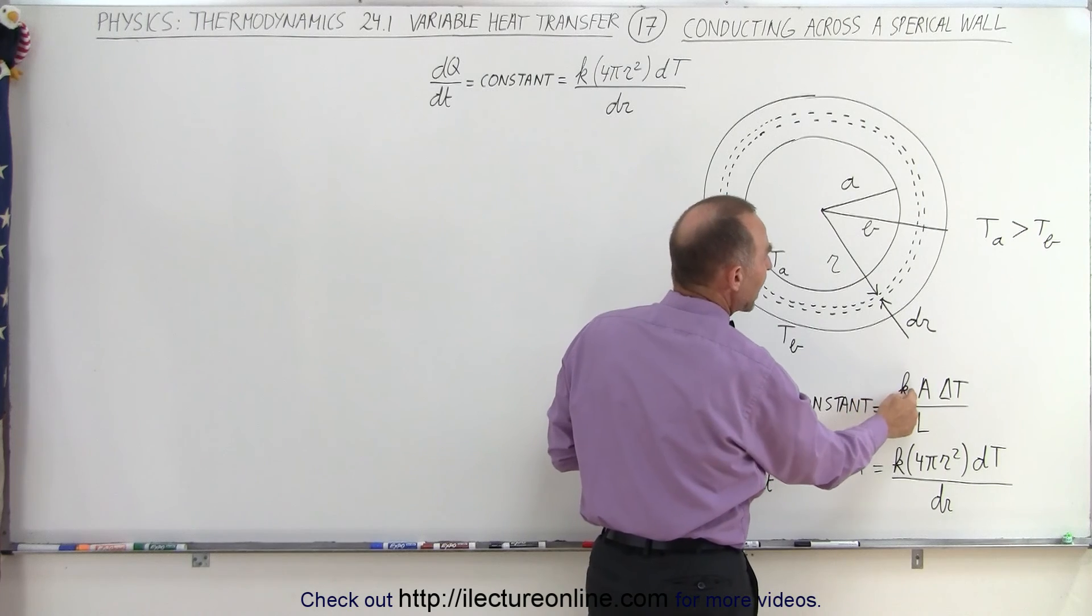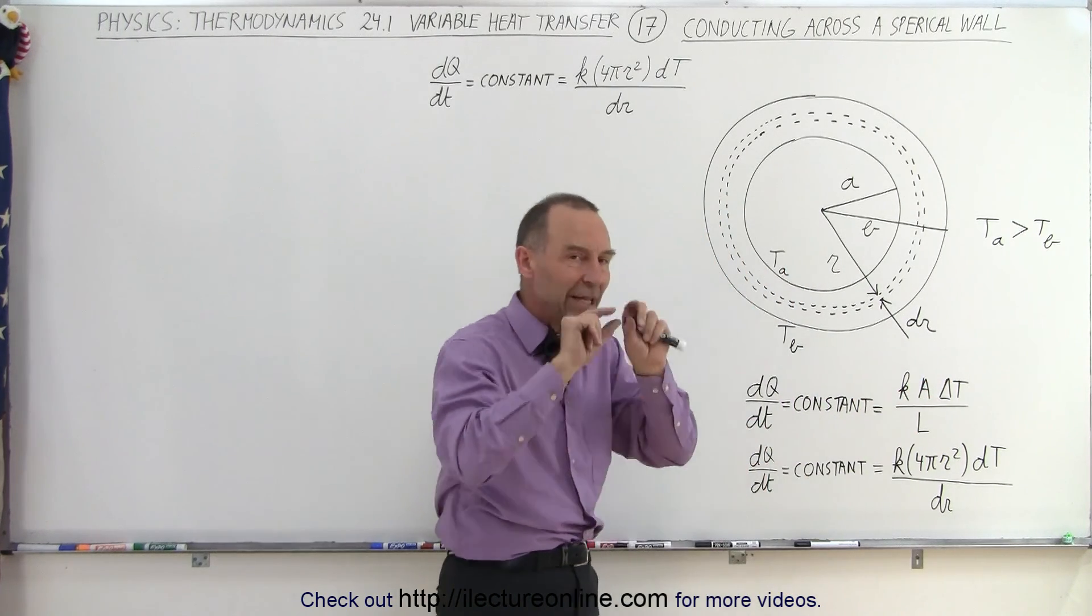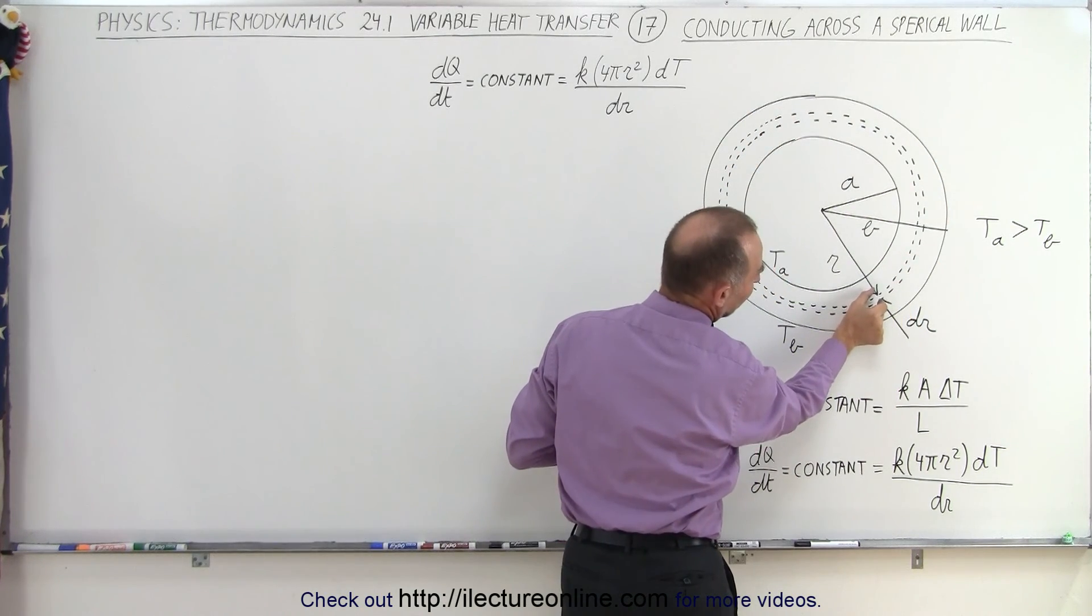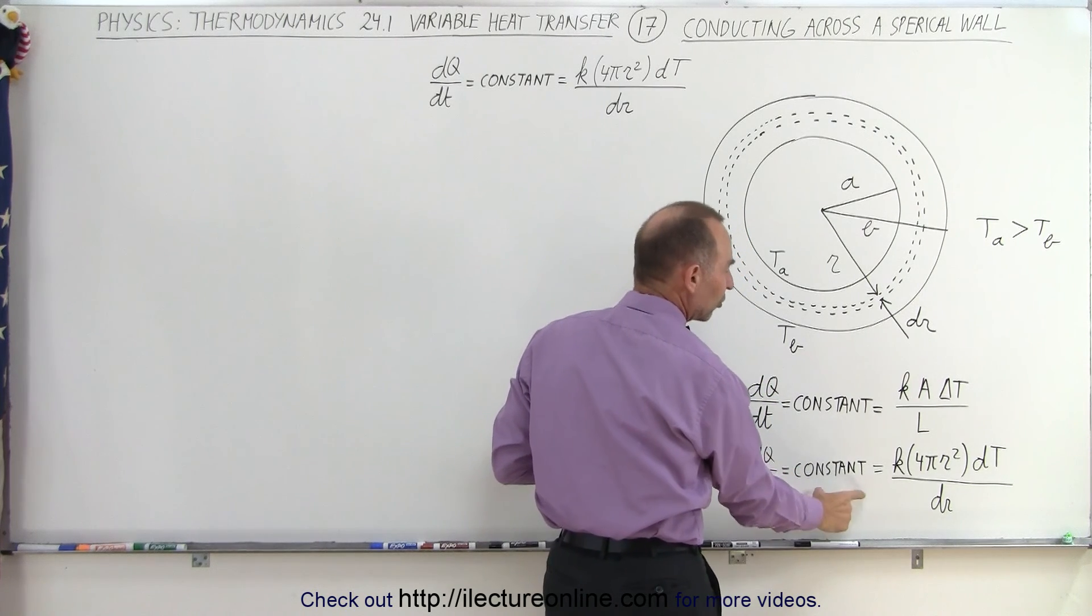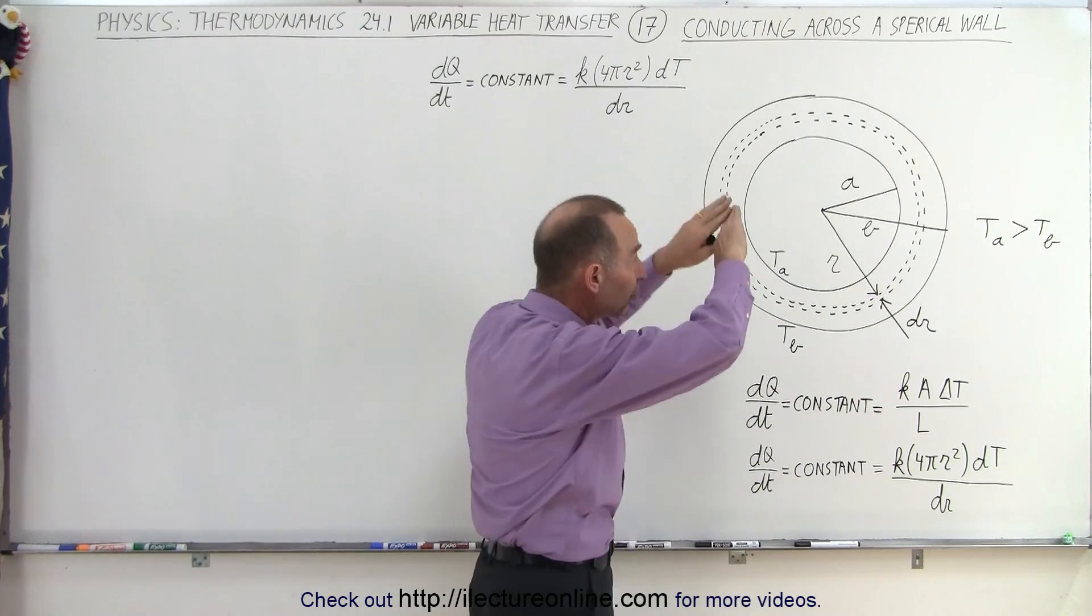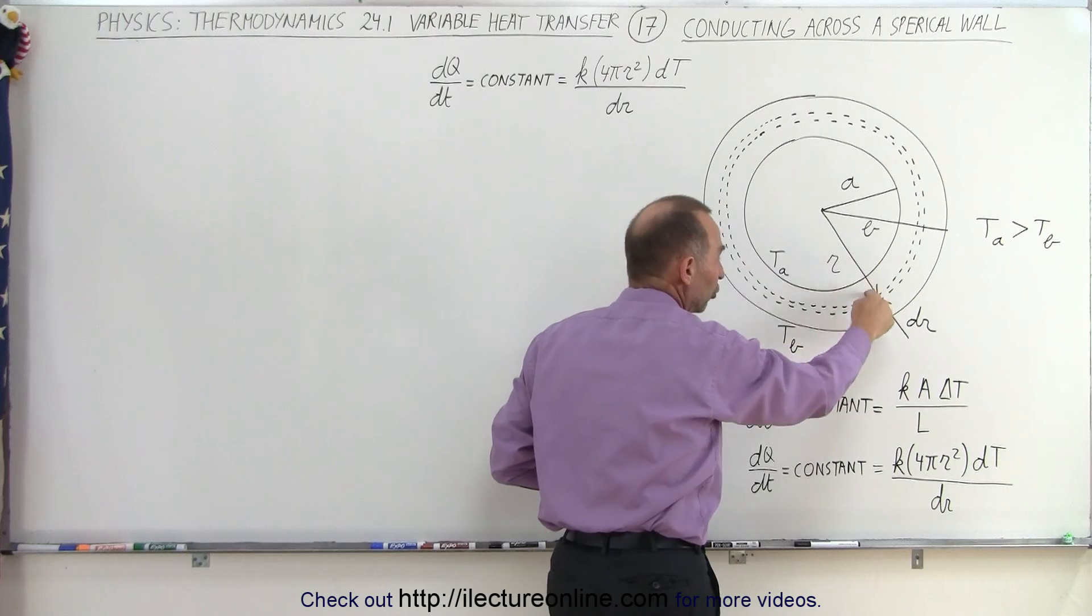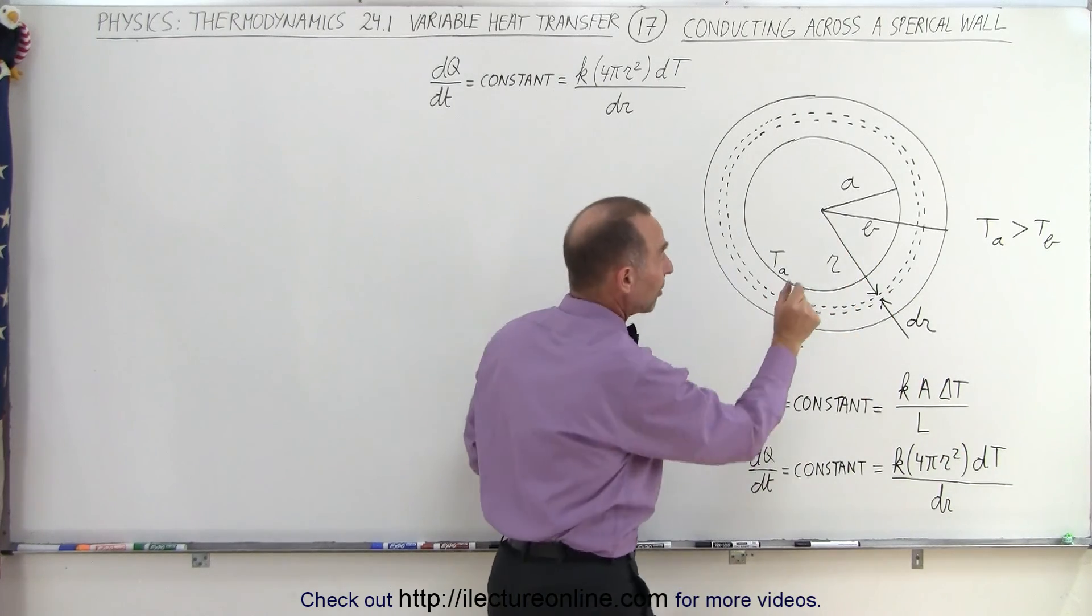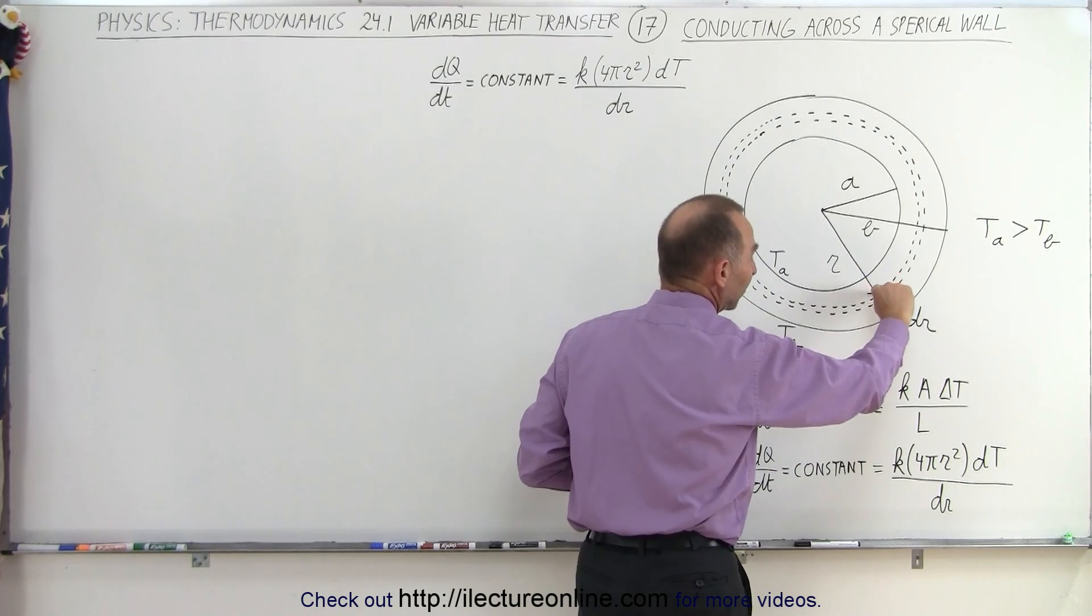It's going to be equal to KA times the difference in temperature divided by the length. And if we take a small little segment of that shell with a small little width dr, we can then say that the dQ/dt, which is constant, is equal to KA times 4πr², which is the surface area of one of those shells, R being the distance from the center to the shell, times dt, a small little change in the temperature across the shell, divided by a small little distance dr traveling from there to there.